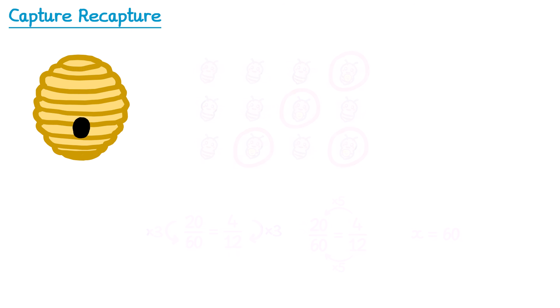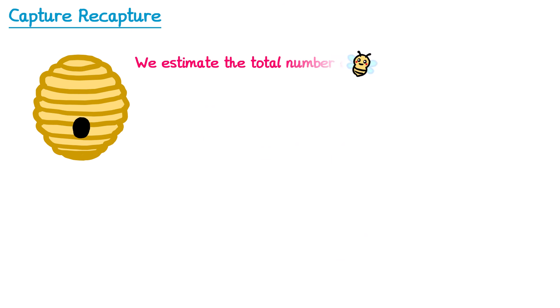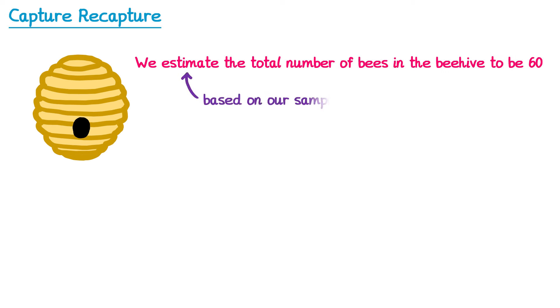So in this example we would estimate that the total number of bees in the beehive was 60. The reason this is an estimate is because it depends on our sample — if we had taken a different sample, we may have got a different estimate.